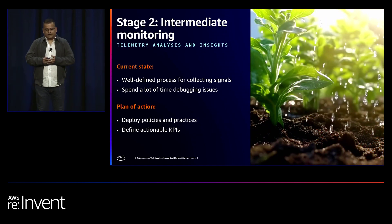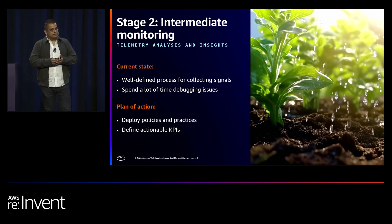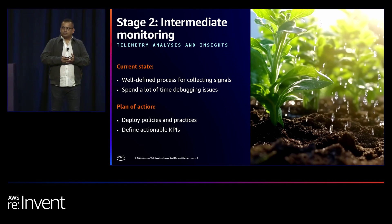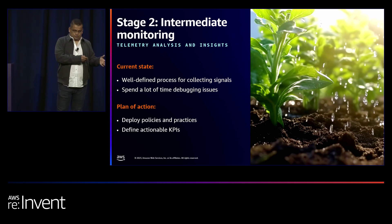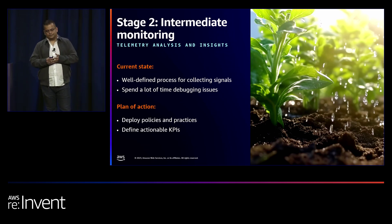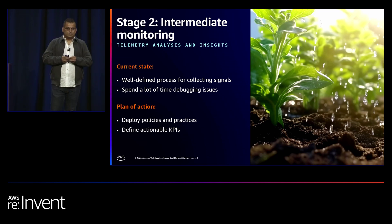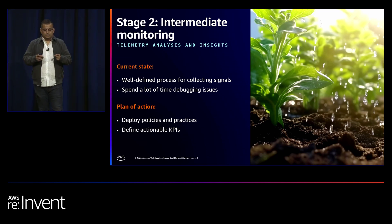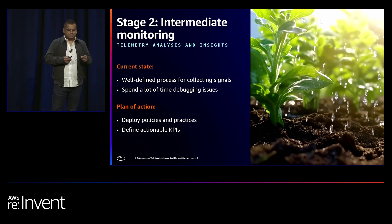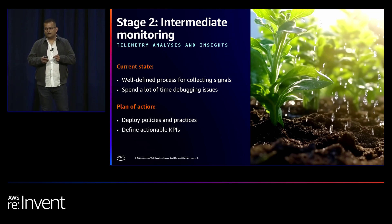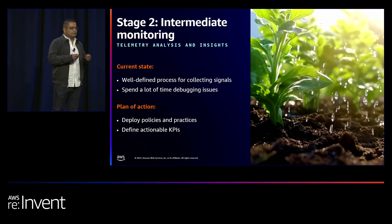Let's look at the stages in detail. We start with foundational monitoring — the most foundational state, which is essentially collecting telemetry data. You have various teams collecting logs or metrics, but these are siloed teams with no common practice in place. At this stage, you should start setting realistic goals for improvement, because if it's siloed you don't have a way to debug end-to-end across your organization's applications. Stage two is intermediate monitoring, which is about collecting telemetry signals and also doing analysis and insights. You now have well-defined processes, but you're still spending a lot of time debugging issues.